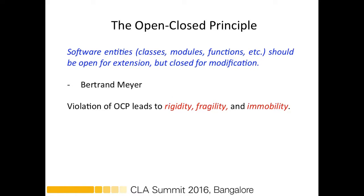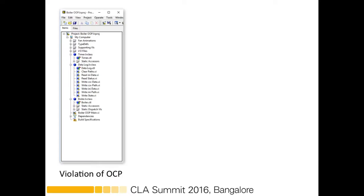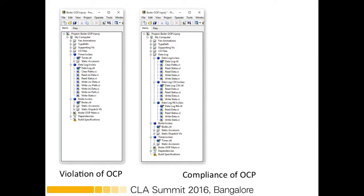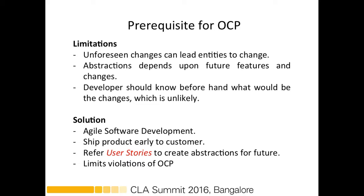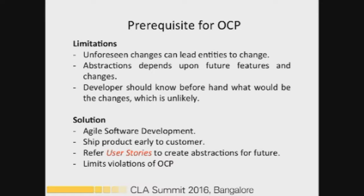The Open/Close Principle states that classes, modules, and functions should be open for extension but closed for modification. Using SRP first, we are then able to add as many extensions as possible without changing the original code in the parent class. There are some prerequisites: we need to know what changes may occur in the future and what features may be added.